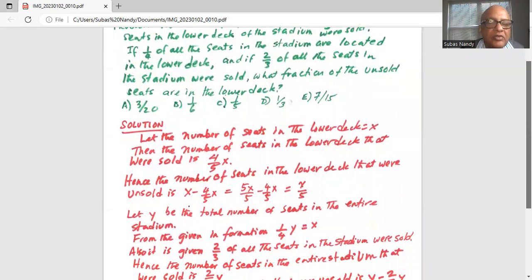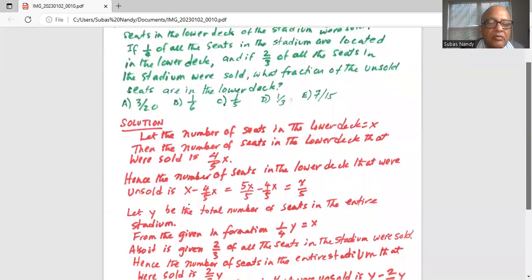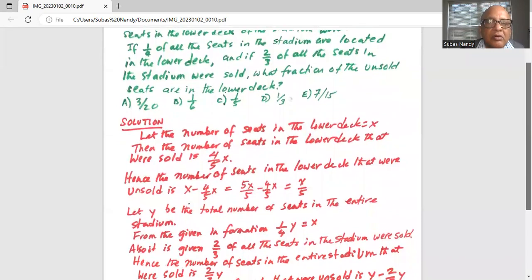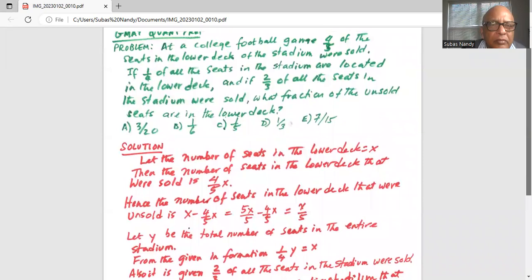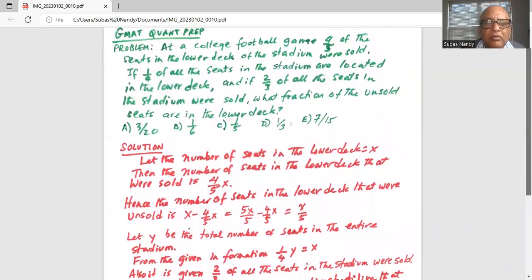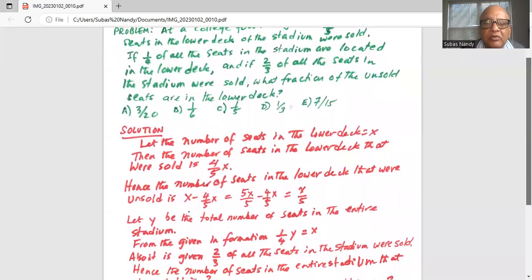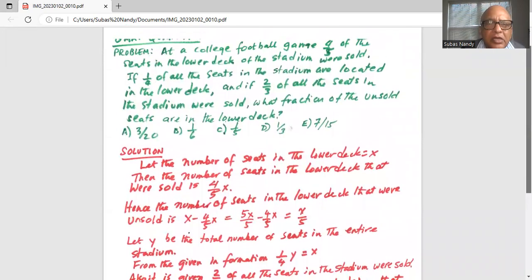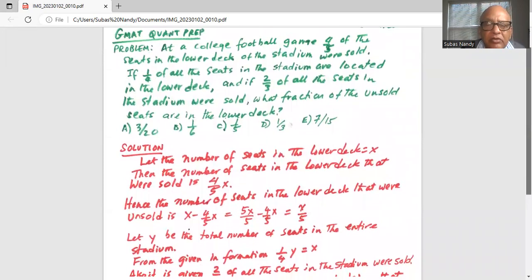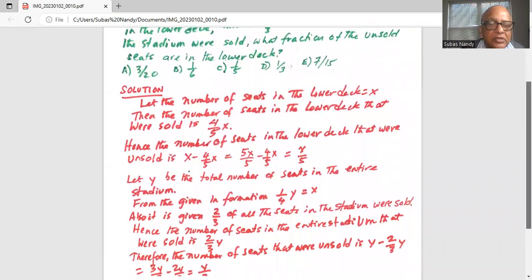Let y be the total number of seats in the entire stadium. From the given information, one-fourth of y are located in the lower deck. So one-fourth y is equal to x.